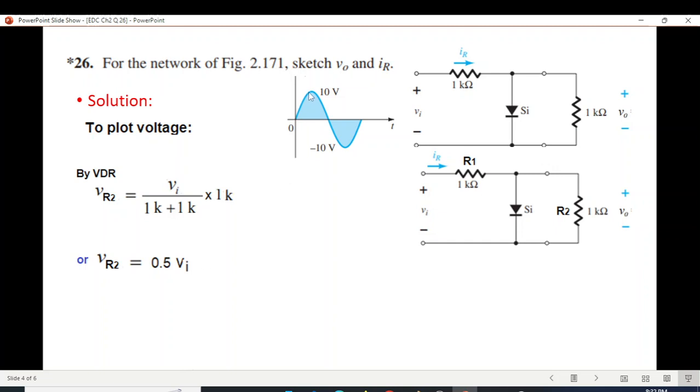Now, what does that mean? That whatever is the peak of this one, it will be half. It will be multiplied by 0.5. So this will be the voltage across this VR2. So it's like this here.